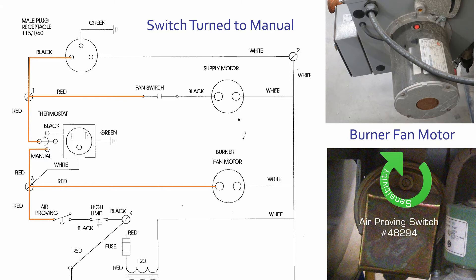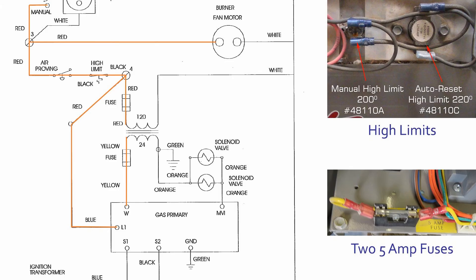The air proving switch is then energized to make sure the burner motor is supplying enough airflow. Next, the high limit switch is activated. If the airflow temperature is below the maximum temperature value, the high limit switch is then satisfied.